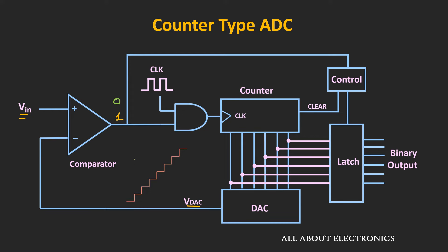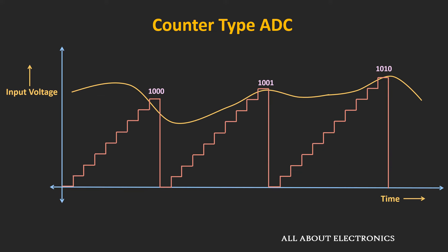The disadvantage of this counter is that every time a new conversion starts, the counter will get reset. That means every time the counter starts from zero onwards. So we can say that the conversion time depends on the magnitude of the input voltage — larger will be the input voltage, the more time the ADC will take for the conversion. In this figure, the typical conversion pattern is shown for this counter-type ADC.